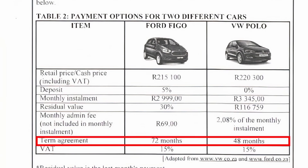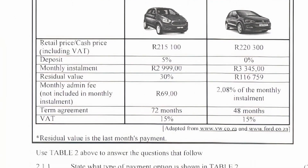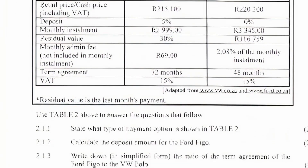In the seventh row, we have the term agreement in months. In the eighth row, we are given a VAT percentage of 15%. There is a note below the table stating that the residual value is the last month's payment. We are instructed to use Table 2 to answer the questions that follow.